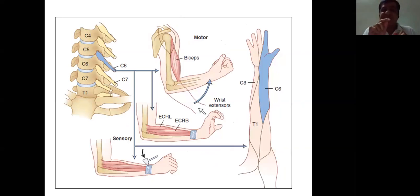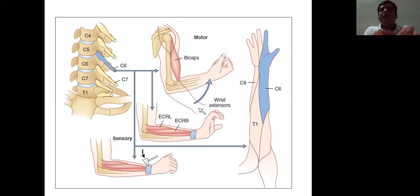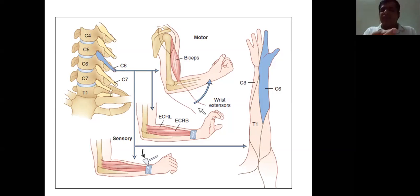For C5-C6 disc prolapse, the C6 nerve root is involved. The main motor to test is wrist extension; elbow flexion is also partly affected. Sensation is along the radial border of the forearm, thumb, and index finger. The reflex is the supinator reflex. To be specific: motor — wrist extension; sensation — radial aspect of forearm, thumb, and index finger; reflex — supinator reflex.